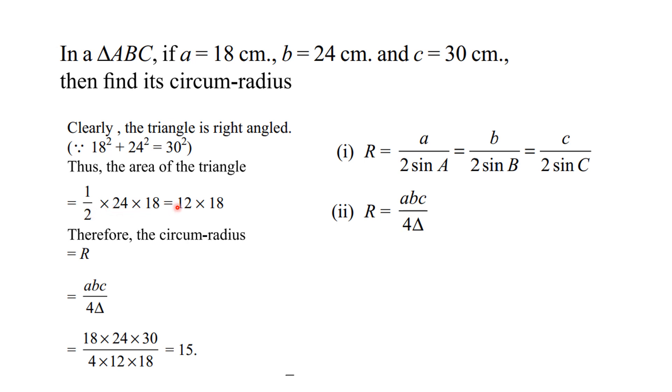The area equals one-half times 24 times 18, which is 12 times 18. Therefore, the circum-radius R equals abc divided by 4A, which equals 18 times 24 times 30 divided by 4 times 12 times 18, which equals 15.